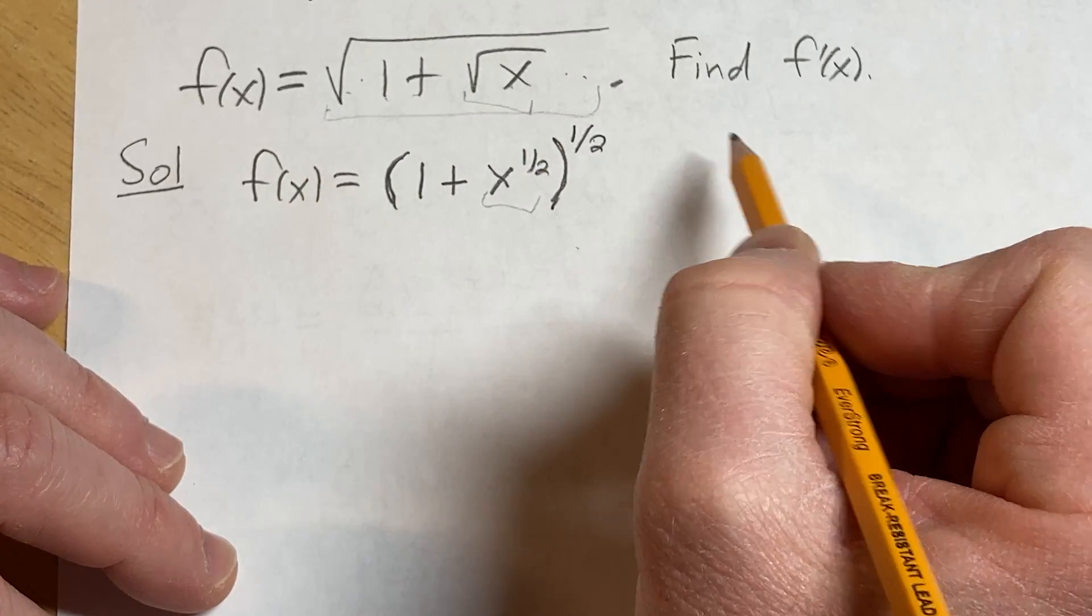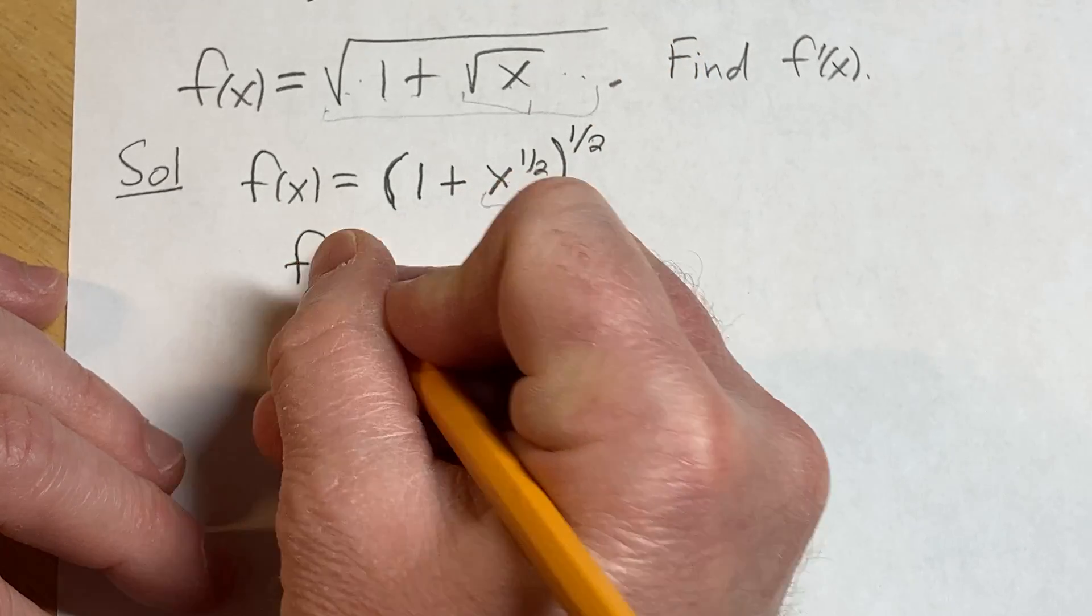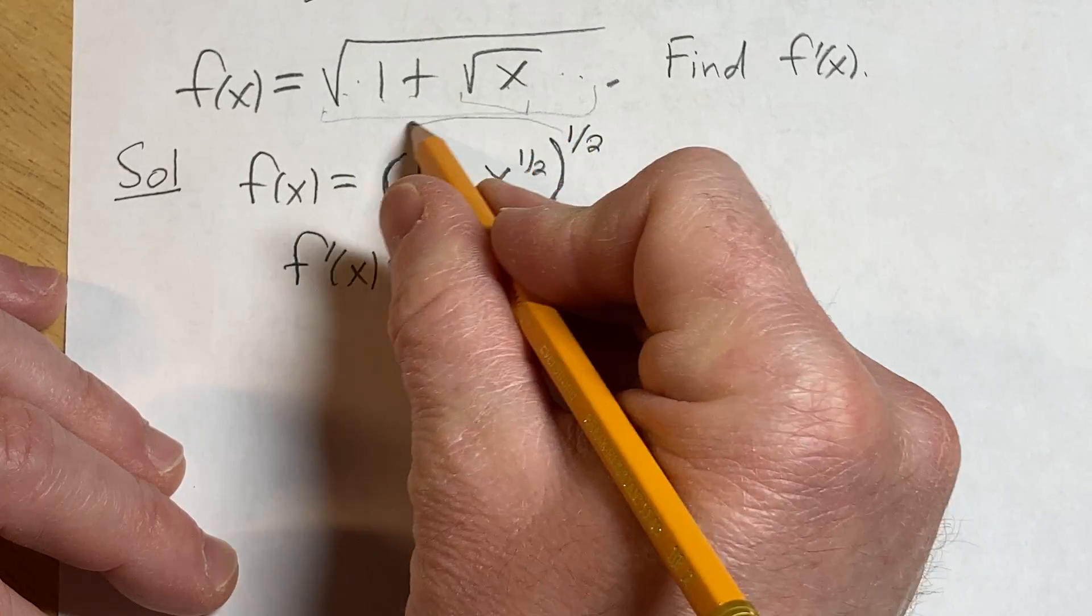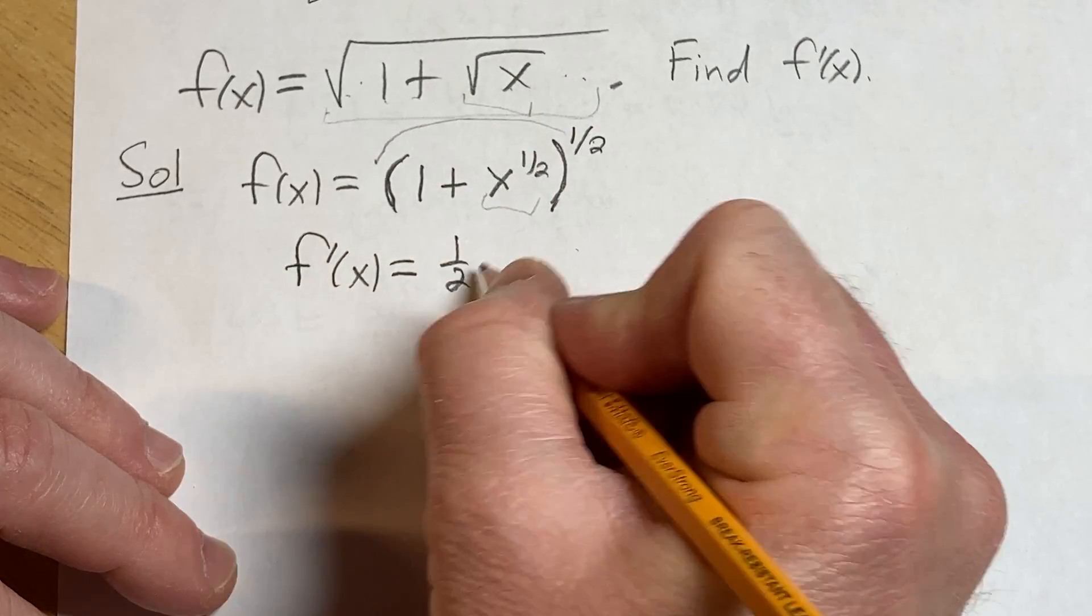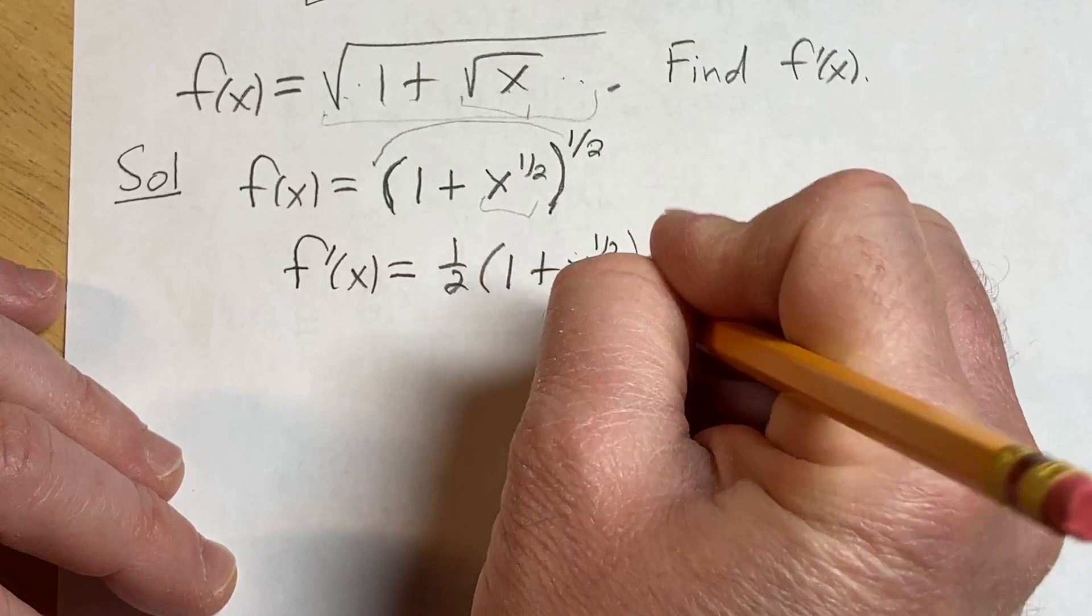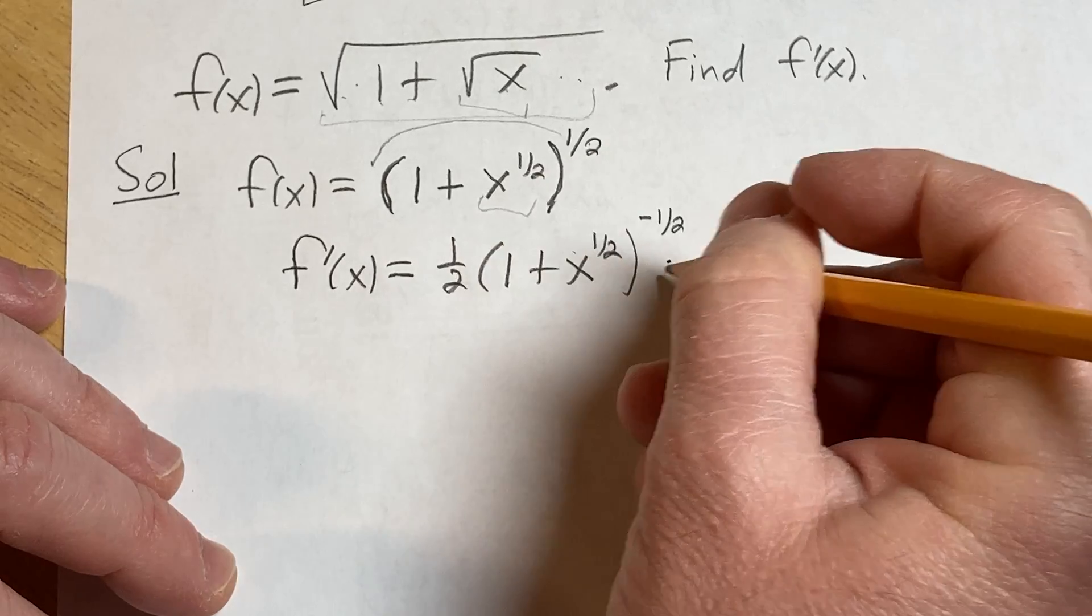Now we are ready to compute the derivative. So we're going to apply the chain rule. So f prime of x is equal to, so here we'll bring down the 1 half, leave the inside untouched, subtract 1 from the exponent, times the derivative of the inside.